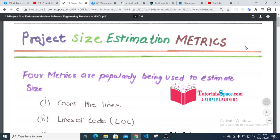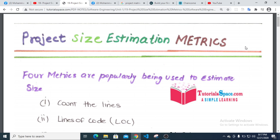Hello, welcome to the software engineering tutorial. We have seen the project metrics, project plan, and project process. We have to define the size and the metrics. We have defined the metrics, the project quality, and the value. Four metrics are popularly being used to estimate size and project value.